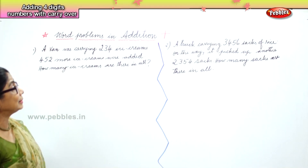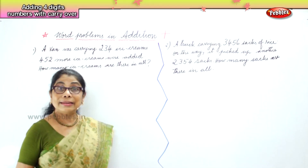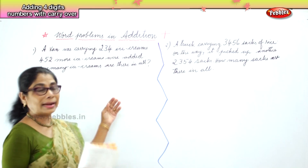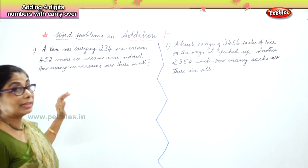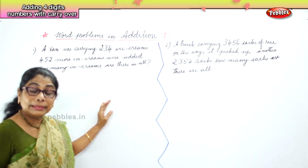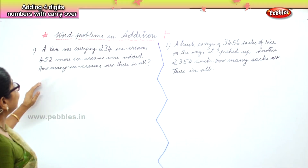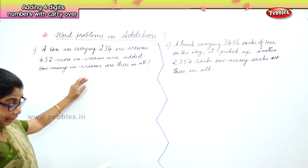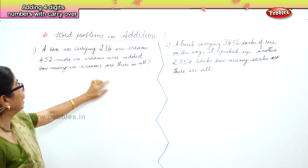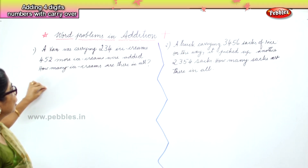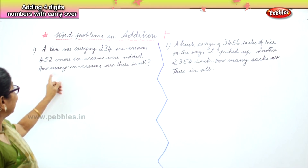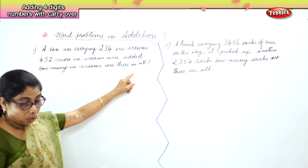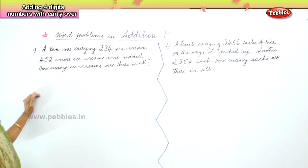First of all, what is the statement that we will write? Look at the first one — a van was carrying 234 ice creams. The statement will be: number of ice creams in the van. Next, number of ice creams added. Finally, total number of ice creams in all. That's all.